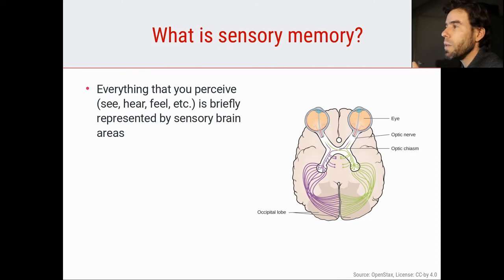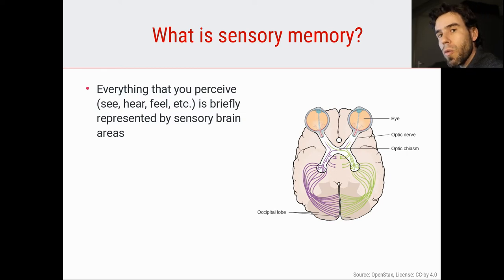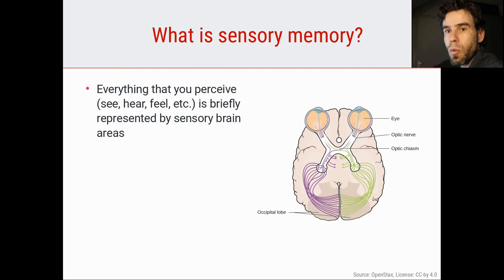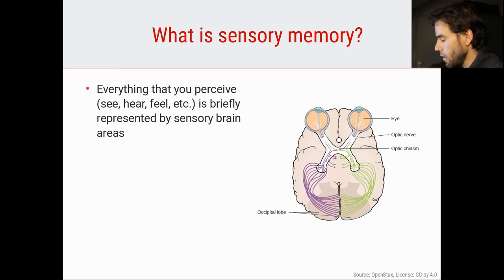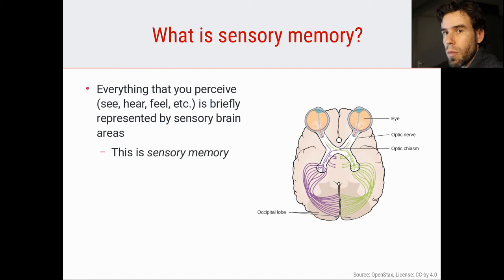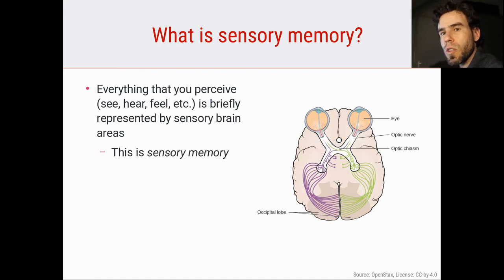Everything that we perceive — everything that we see, hear, or feel — is very briefly represented in our sensory brain areas, the brain areas we looked at during the perception section. So if you visually see something, this briefly triggers activity in your occipital cortex — your primary visual cortex. And this is essentially sensory memory: a brief sensory trace that anything you perceive imprints on your brain.